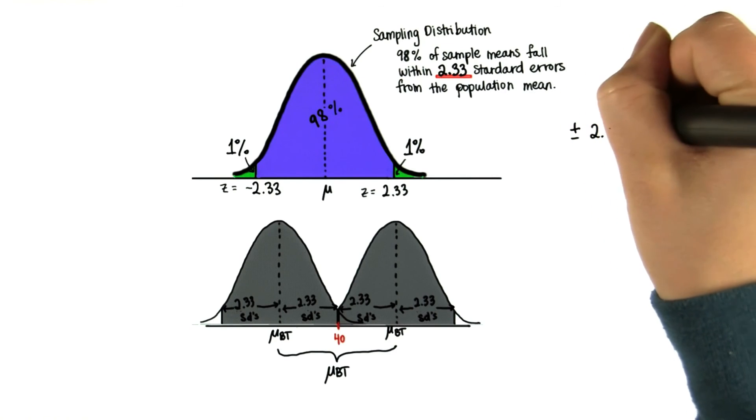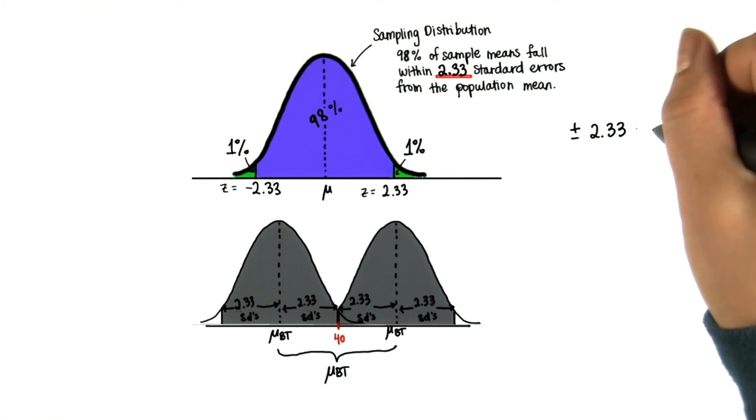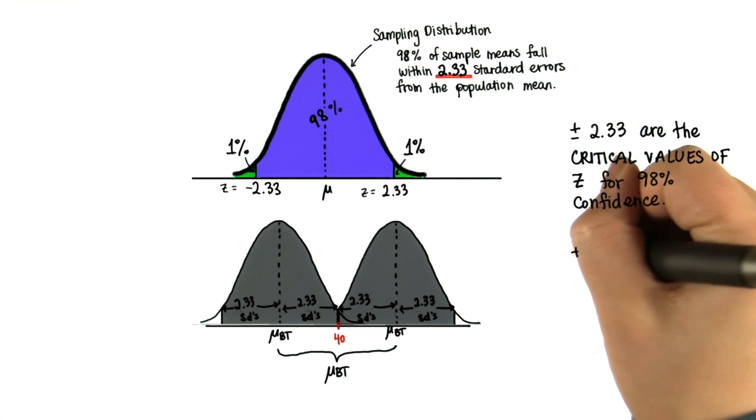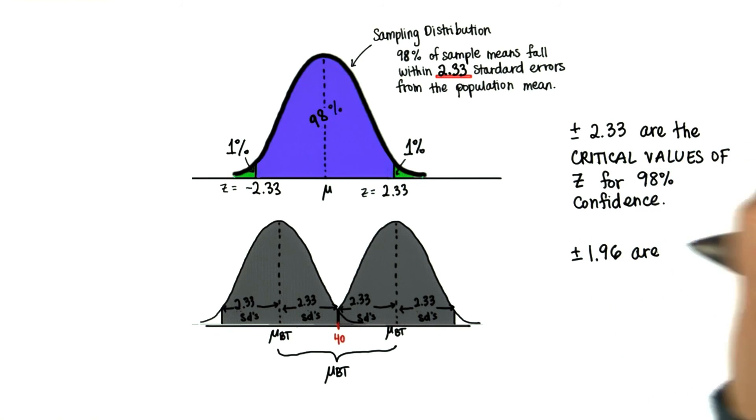Positive and negative 2.33 is called the critical value of z for 98% confidence. And if you remember, positive and negative 1.96 are the critical values of z for 95% confidence.